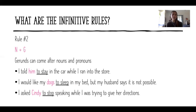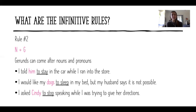Rule number two: nouns plus infinitives — infinitives can come after nouns and pronouns. 'I told him to stay in the car while I ran into the store' — 'him' is the pronoun and 'to stay' is the infinitive. 'I would like my dogs to sleep in my bed' — 'dogs' is the noun and 'to sleep' is the infinitive. 'I asked Cindy to stop speaking while I was trying to give her directions' — 'Cindy' is the noun and 'to stop' is the infinitive.